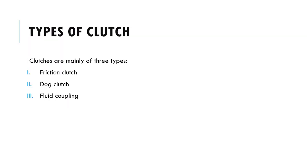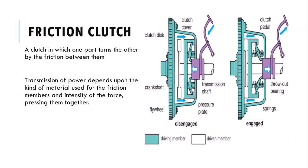The three major types of clutch are friction, dog, and fluid coupling. In the friction clutch, transmission takes place whenever the friction surfaces come into contact. As you can see, there is a driving member and a driven member. Whenever you press the clutch, it gets disengaged; when you leave it, it gets engaged.